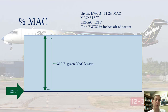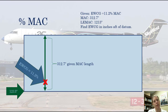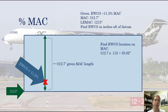The other key piece of information is that our center of gravity is at 11.2% of the mean aerodynamic chord. The total MAC length is 312.7 inches. Estimating, that's only a little over 10% of the way along. To find the distance, I multiply 0.112 by 312.7. Doing that multiplication — 312.7 times 0.112 — I get 35.02 inches.